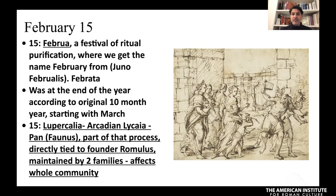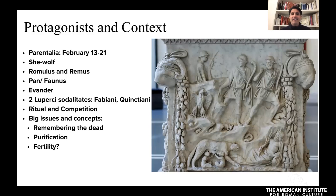Who are the protagonists? We have the Parentalia from the 13th to the 21st of February. The she-wolf with Romulus and Remus is depicted on the famous altar from Ostia, now in the Museo Nazionale Romano — you can see the she-wolf suckling the twins, and Pan is often present in these reliefs. Faunus is the deity venerated in February, with his first temple on the Tiber Island. And Evander is a figure that looms large in the ancient sources, also tied into this ritual.